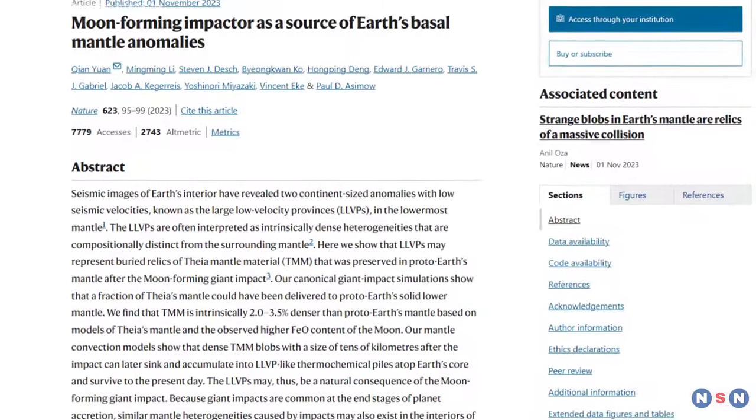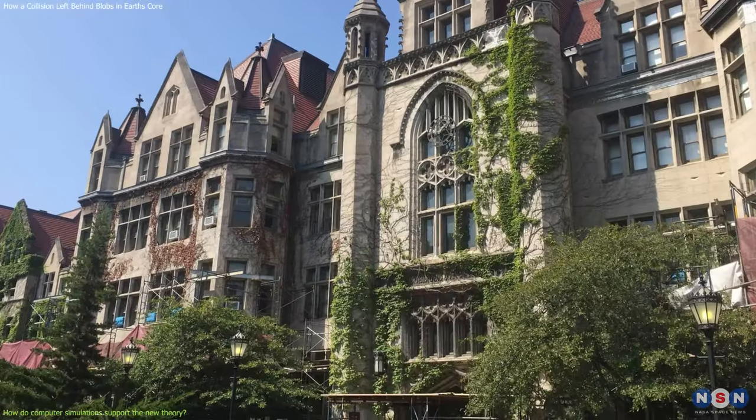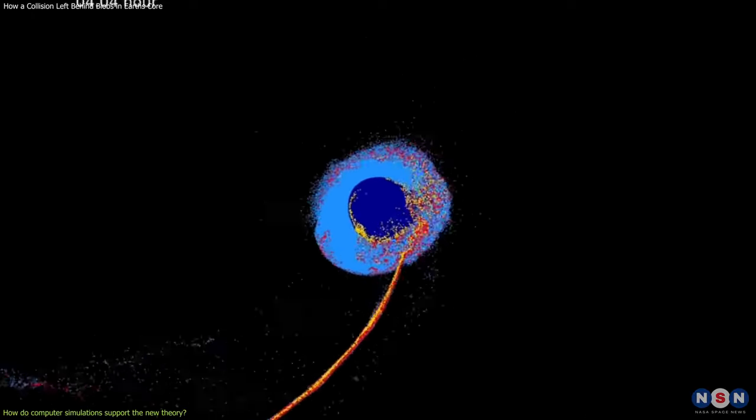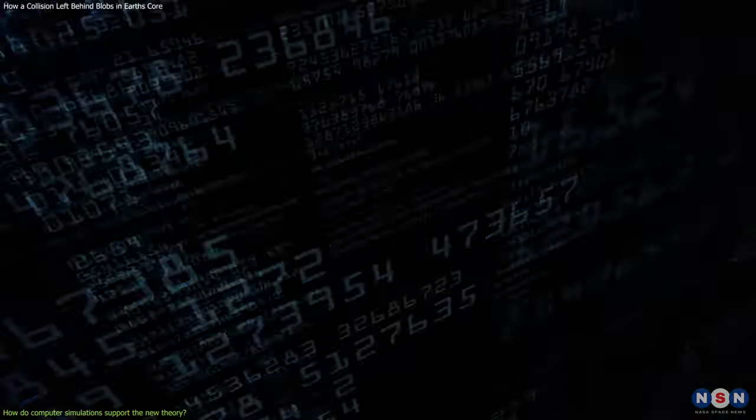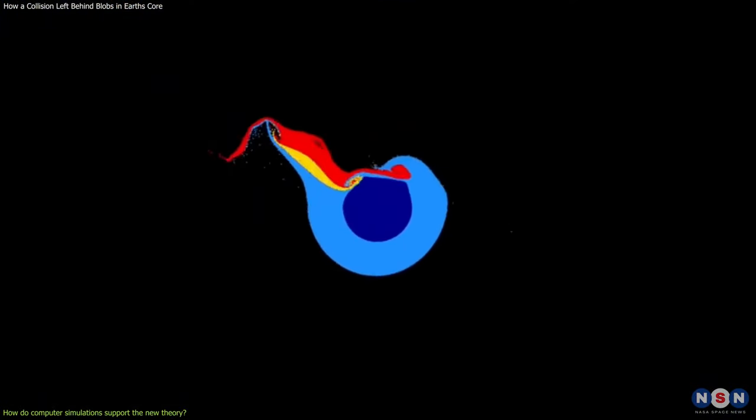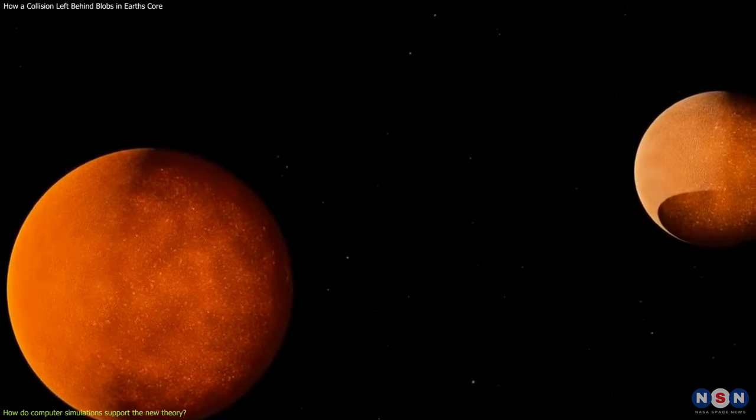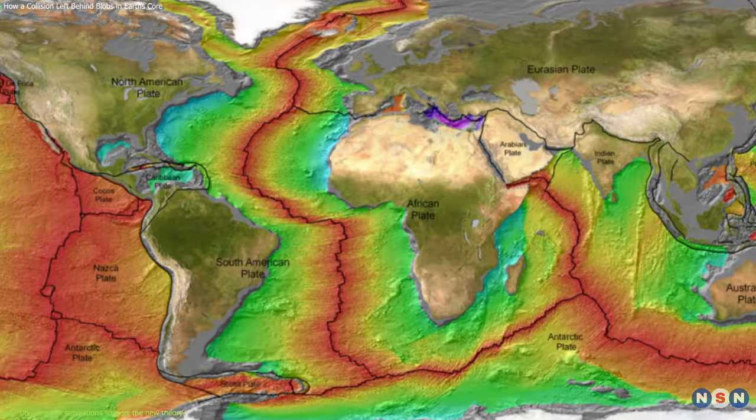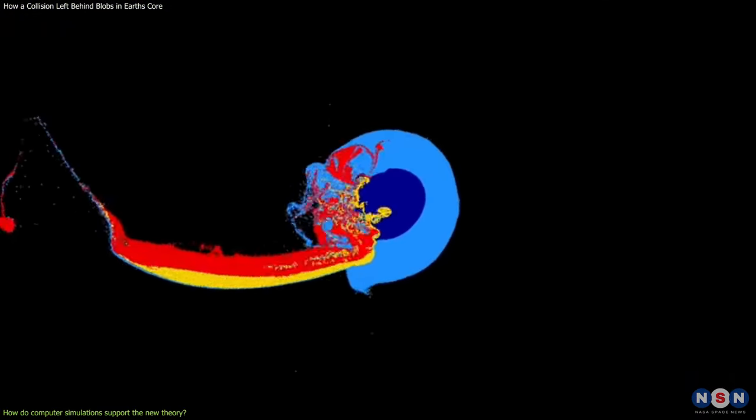To test the new theory, a team of researchers from Arizona State University and the University of Chicago used computer simulations to model the collision between Earth and Theia and track the fate of Theia's material in the Earth's mantle. They used a powerful supercomputer called Mira, which can perform 10 quadrillion calculations per second, to run hundreds of simulations with different initial conditions and parameters, such as the size, speed, angle, and composition of Theia. They also used the latest data and constraints from geophysics, geochemistry, and planetary science to make their simulations as realistic as possible.